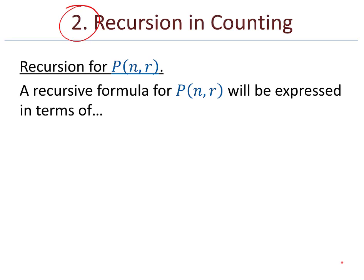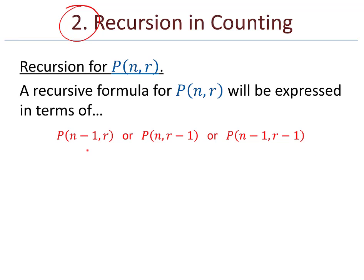In general, if I have n points, I can count how many edges there are in n-1 vertices and then add n-1, giving s(n) = s(n-1) + (n-1). Let's take a look at recursion for n permute r. A recursive formula for n permute r is a little stranger because I have two inputs, not just one. So one or both of those inputs must decrease in order to find a recursive formula.